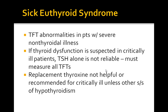In severe illnesses, you have decreased TBG and albumin, which results in an increased reverse T3 and a very decreased T3 level. There's also increased degradation of T4 and a central decrease in TSH.